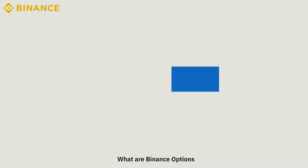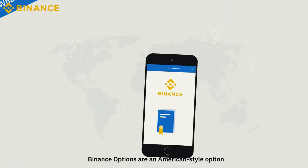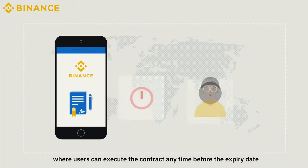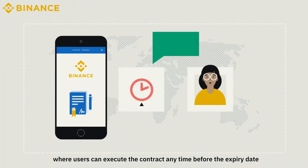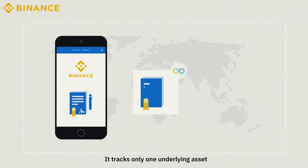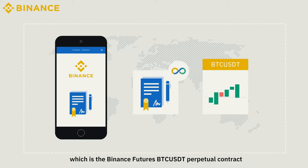What are Binance options? Binance options are an American-style option where users can execute the contract any time before the expiry date. It tracks only one underlying asset, which is the Binance Futures BTC/USDT perpetual contract.